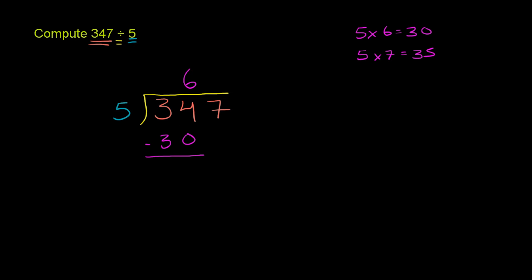34 minus 30. Let me do this in a new color. 34 minus 30. Well, 4 minus 0 is 4. 3 minus 3 is just 0. And then we can bring down this 7 here.